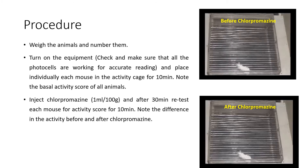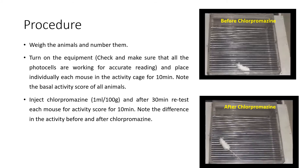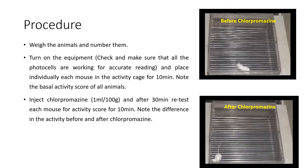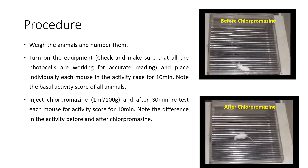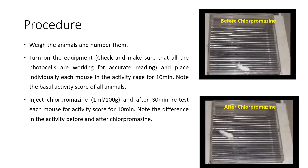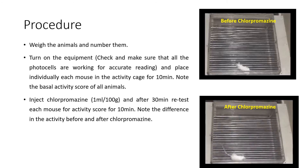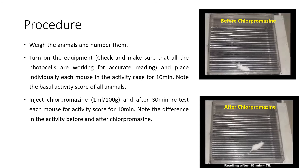Now we inject 1 ml per 100 grams of chlorpromazine, and after 30 minutes we retest each mouse for the activity score for 10 minutes. After chlorpromazine — since it is a CNS depressant — the locomotor activity of the mice is reduced. The mice is now moving slowly compared to earlier. After 10 minutes, we record the reading.